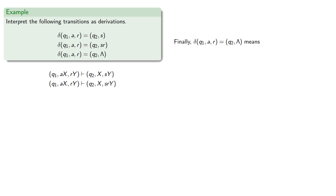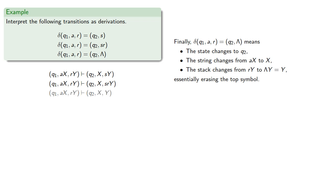Finally, δ(q₁, a, r) equals (q₂, λ) means the state changes to q₂, the string changes from ax to x, again we've consumed that first symbol, and the stack changes from rγ to λγ, which is just γ, essentially erasing the top symbol. And so we can write (q₁, ax, rγ) derives (q₂, x, γ) in one step.